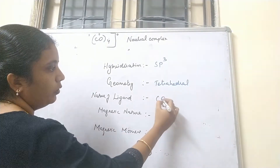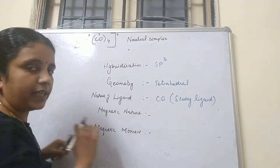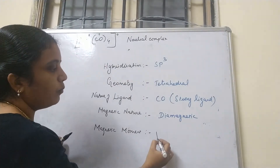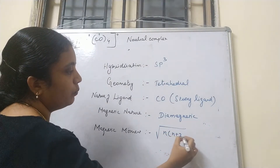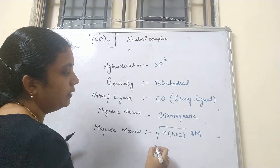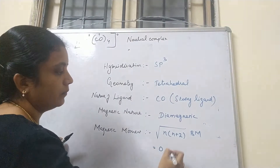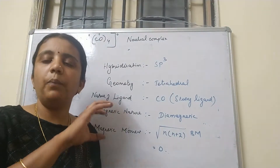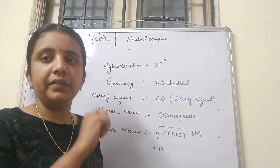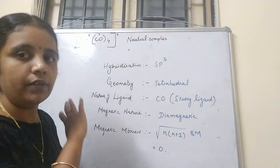The ligand is CO, which is a strong ligand. Strong ligand causes pairing up of electrons, so the magnetic nature is paired — meaning it is diamagnetic. The magnetic moment formula is √(n(n+2)) Bohr magnetons, where n is the number of unpaired electrons. Since all electrons are paired, n = 0, and the magnetic moment is 0.